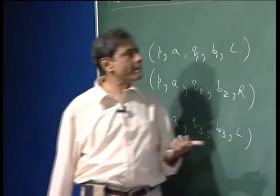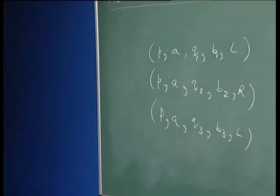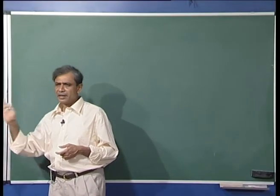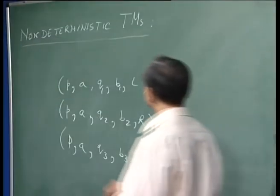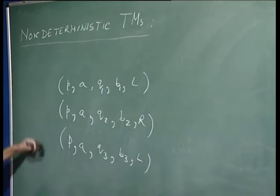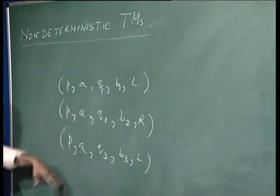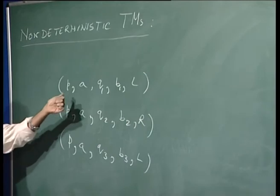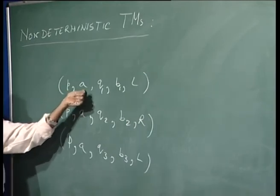But suppose we have a Turing machine where, for the same present state P and symbol A, we have several different quintuples — for example: (P, A, Q1, B1, L), (P, A, Q2, B2, R), and (P, A, Q3, B3, L). These are distinct quintuples sharing the same first two components. For the same present state and present symbol, we have a number of quintuples.